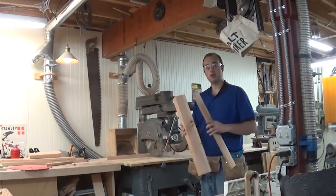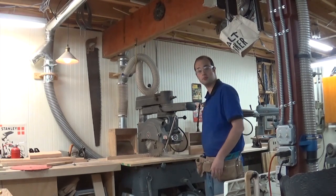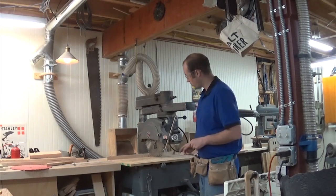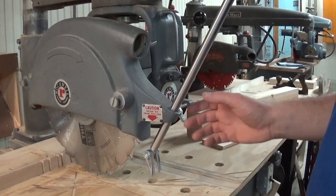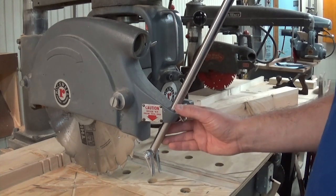But this video is not about ripping big pieces of wood on the radial arm saw, and it's not about blade selection. This video is about this accessory right here. In today's video, we're going to make this anti-kickback pawl assembly for the radial arm saw.